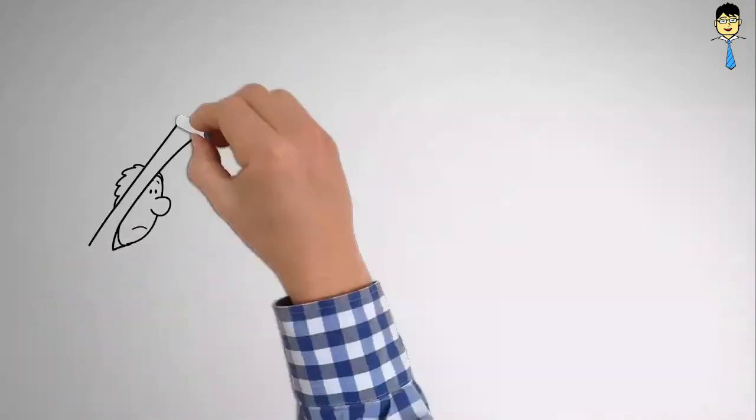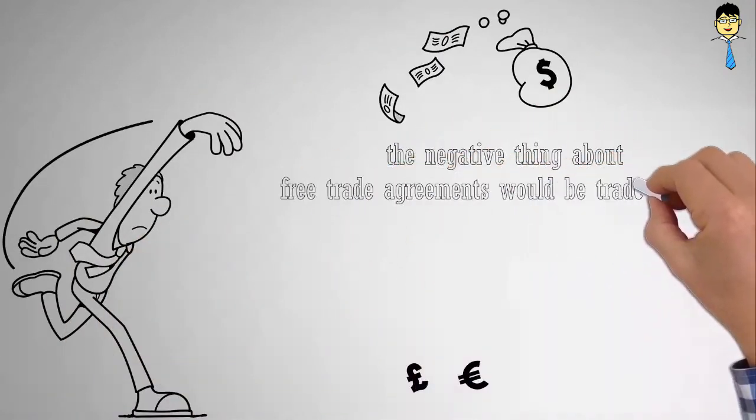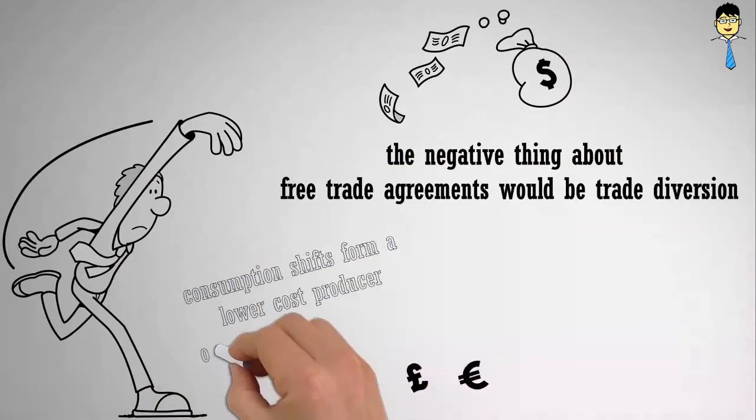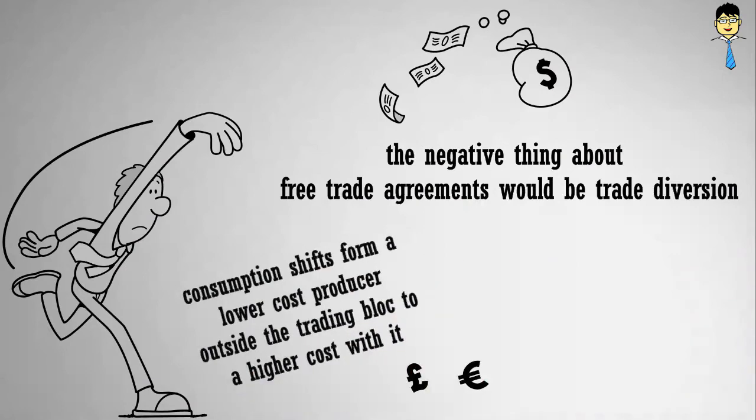However, the negative thing about free trade agreements would be trade diversion. Trade diversion occurs when consumption shifts from a lower-cost producer outside the trading block to a higher-cost producer within it.